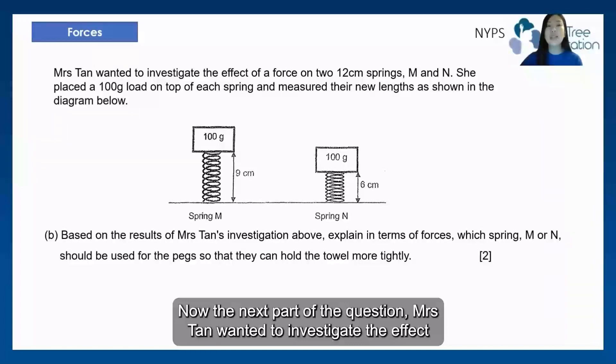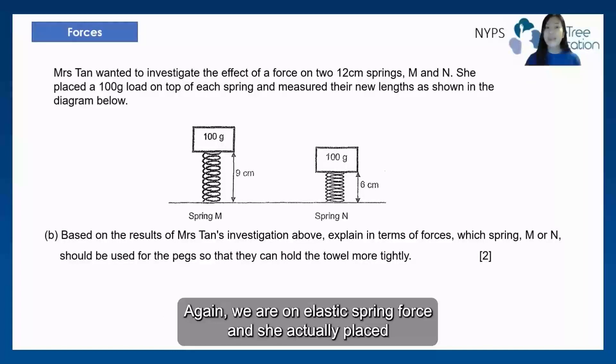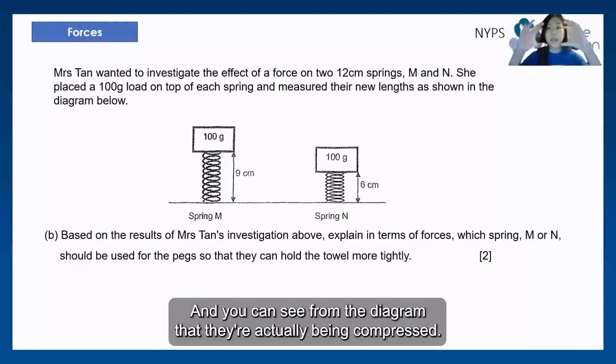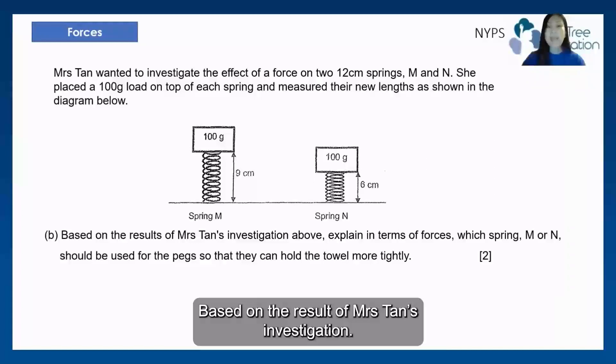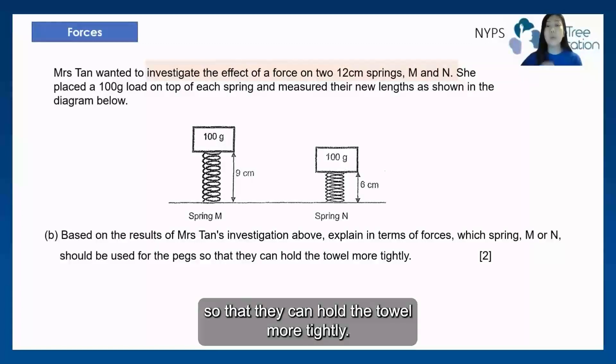Okay, now, the next part of the question. Mrs. Tan wanted to investigate the effect of a force on two 12 cm springs, M and N. Again, we are on elastic spring force. And she actually placed a 100 g load on each of them. And you can see from the diagram that they are actually being compressed. Based on the result of Mrs. Tan's investigation, explain in terms of forces which springs should be used so that you can hold the towel more tightly.